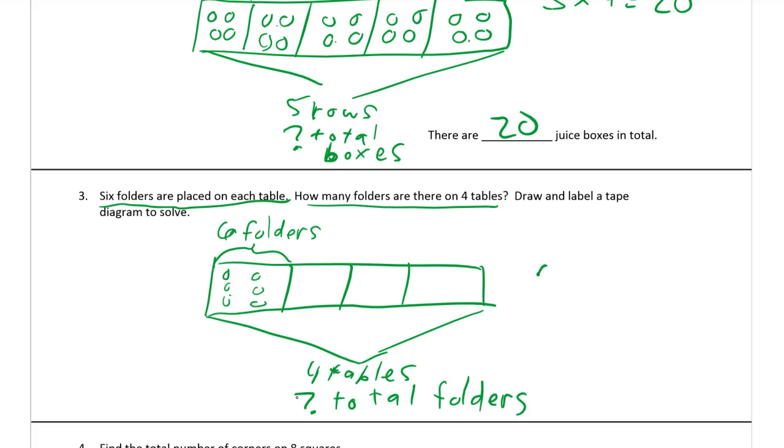So we have six folders times four tables. You can look it up on another page - 24. Or draw the rest of the folders and count them all, you can do that too. Now we have to write our statement here because the other one had the statement written for us, but now we have to write the whole thing out ourselves. There are 24 folders in all.